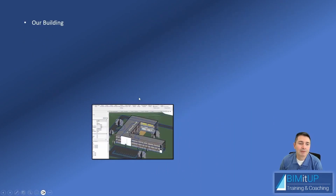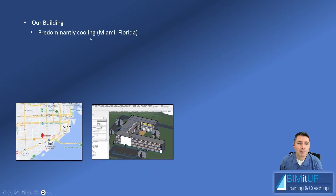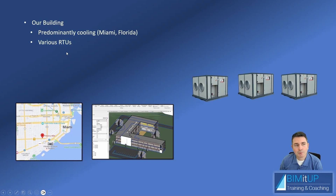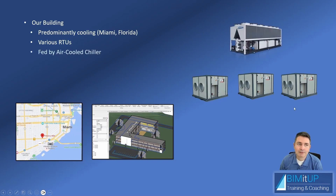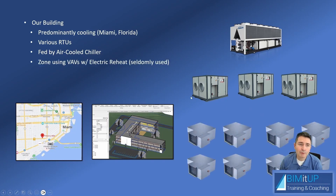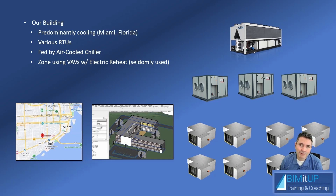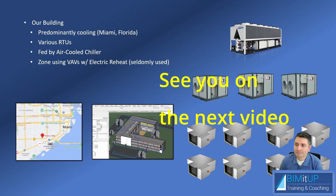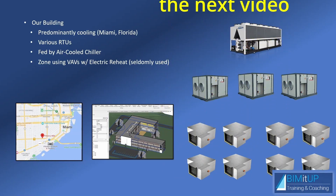For our building, it's going to be predominantly cooling because we're in Miami, Florida. We'll have various RTUs on the roof fed by an air-cooled chiller, and then distribute from the AHUs to VAV boxes with electric reheat. Even though electric reheat is pretty inefficient, we typically don't turn it on here in Florida because it's hot. Alright, let's go to Revit.